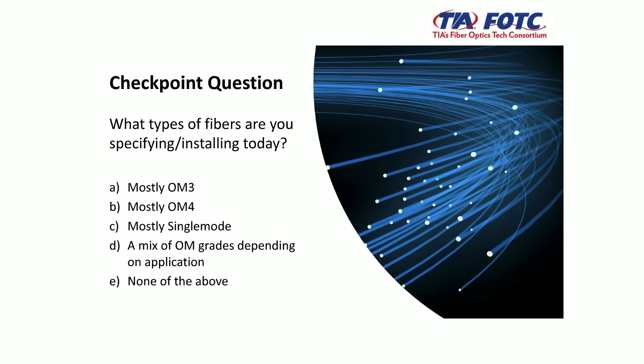The second polling question asks: what types of fiber are you specifying and/or installing today? Options are: A — mostly OM3; B — mostly OM4; C — mostly single mode; D — a mix of OM grades depending on the application; E — none of the above or not sure. I will leave the polling questions open for several minutes to give all of you a chance to respond.